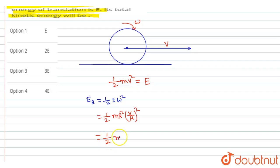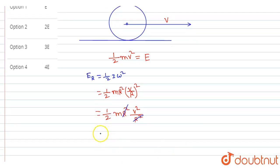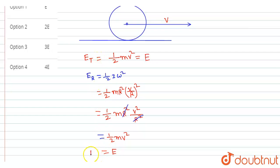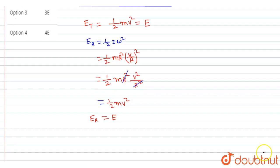Substituting, rotational energy = ½ × mr² × (v/r)² = ½ × m × r² × v²/r². The r² terms cancel out, giving rotational energy = ½mv², which equals E. So the rotational energy is also equal to E, just like the translational energy.